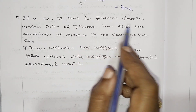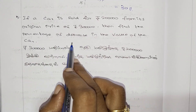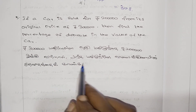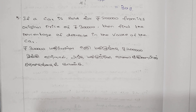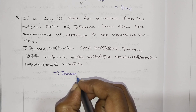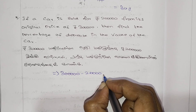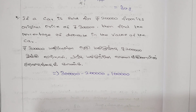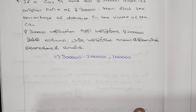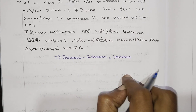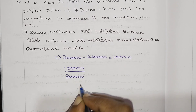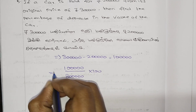If your car is sold for 2 lakhs from its original price of 3 lakhs, find the percentage decrease in the value of the car. If you have a car worth 3 lakhs and sell it for 2 lakhs, the decrease is 3 lakhs minus 2 lakhs, which equals 1 lakh. This 1 lakh is the numerator, and the actual price of 3 lakhs is the denominator, multiplied by 100 to get the percentage.